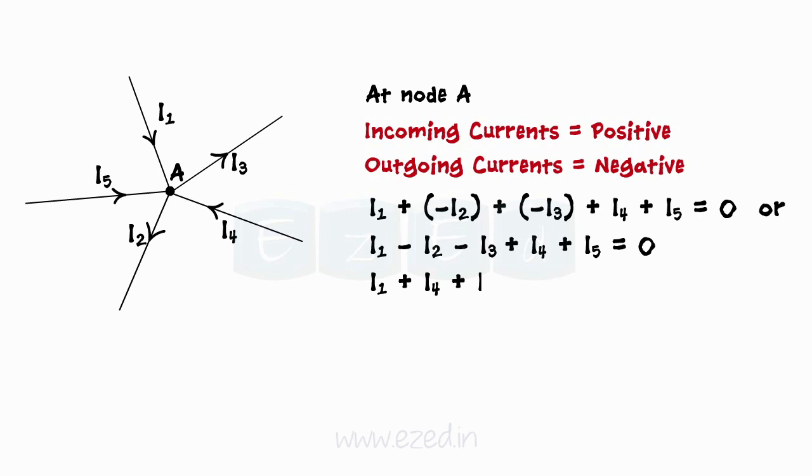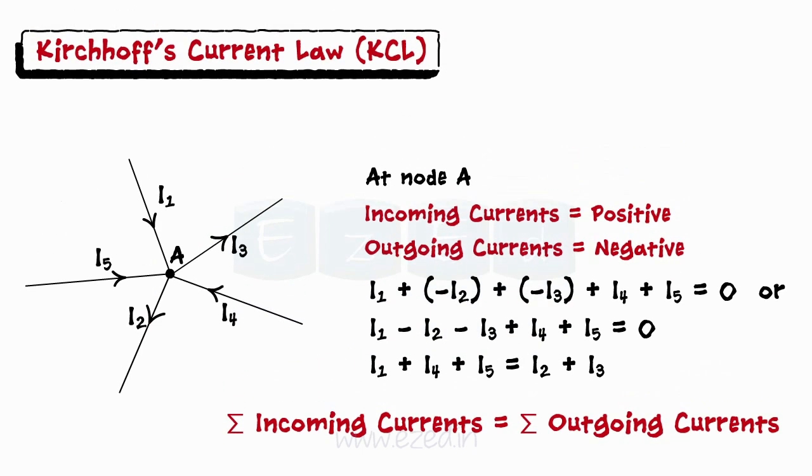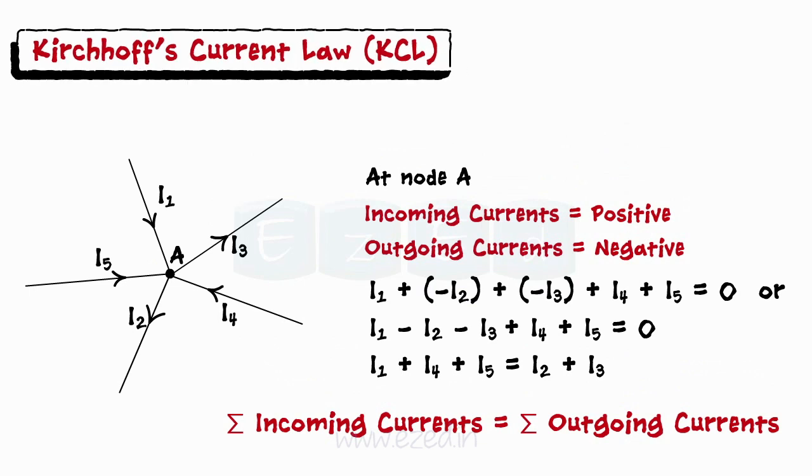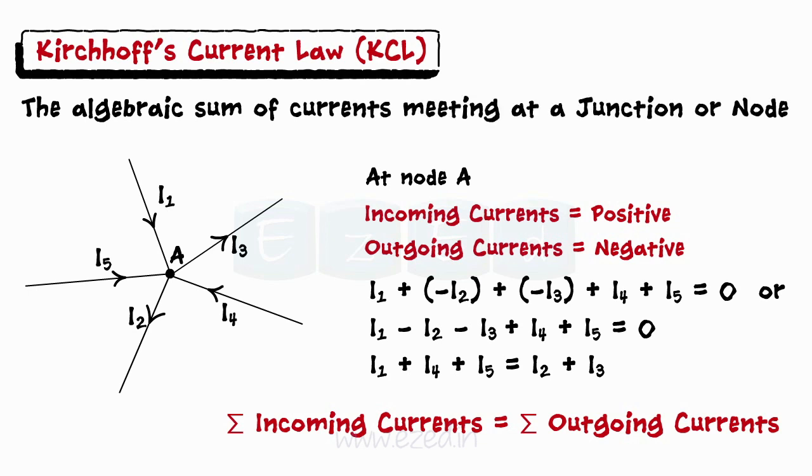That is, sum of all incoming currents at node A equals sum of all outgoing currents from node A. This is nothing but the Kirchhoff's current law. Thus, Kirchhoff's current law states that the algebraic sum of currents meeting at a junction or node in an electric circuit is zero.